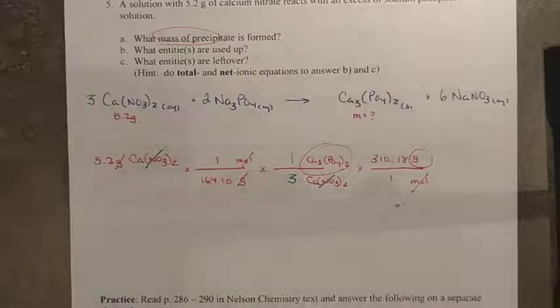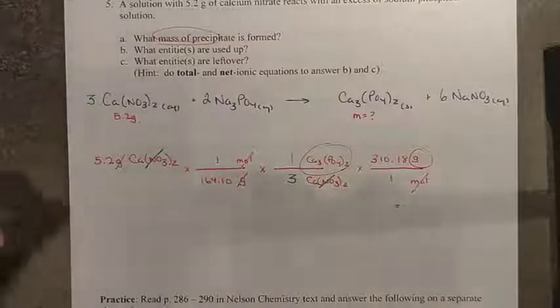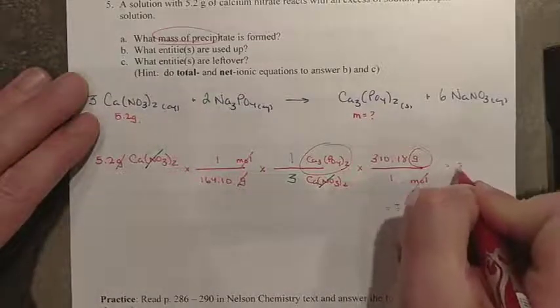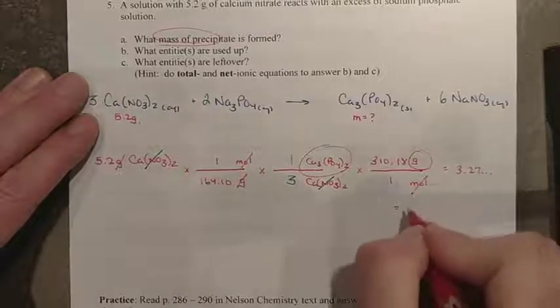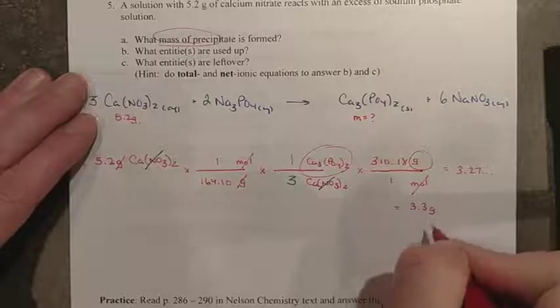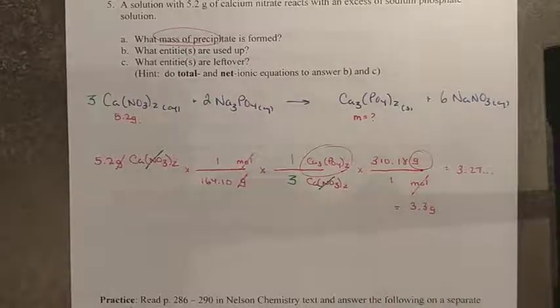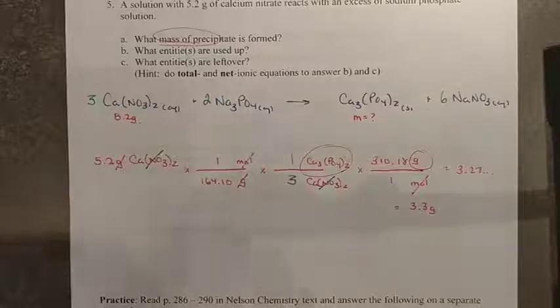This equals, when we round the answer, because we're running out of room here, 3.3 grams as the 3.27 rounds up to 3.3 grams. So there you go. That's the calculation there.